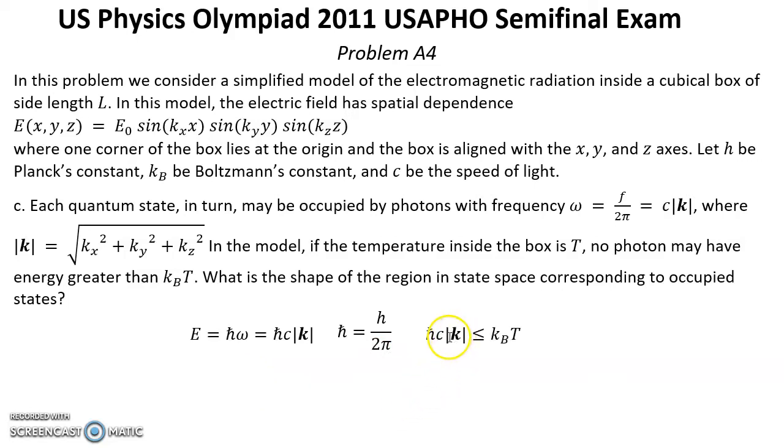Energy must be less than K_B T. So it means that in our space, this inequality corresponds to a ball with radius K equals this expression. So that's the shape of our region.